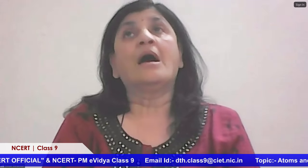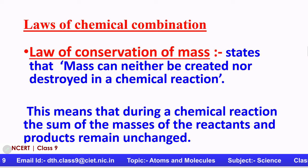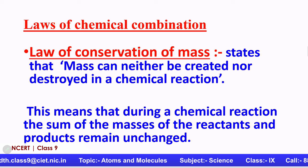Much later, a Greek scientist said the same thing. He said if we go on cutting or dividing a matter, a point will come that we cannot divide it further, and that will be the smallest part of that particular matter. He called it atom. The meaning of atom is that you cannot divide it further — something that is undivided. That part is called an atom.